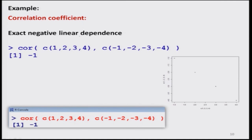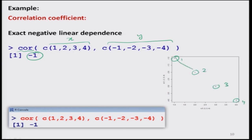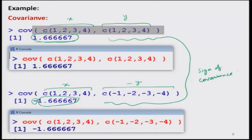Now we take another example: x is the vector 1, 2, 3, 4, but y is −1, −2, −3, −4. Finding the correlation by COR gives minus 1. In the graphic, all points lie exactly on the straight line and the relationship is decreasing — this indicates exact negative linear dependence. We try this in R and see whether these things are working.